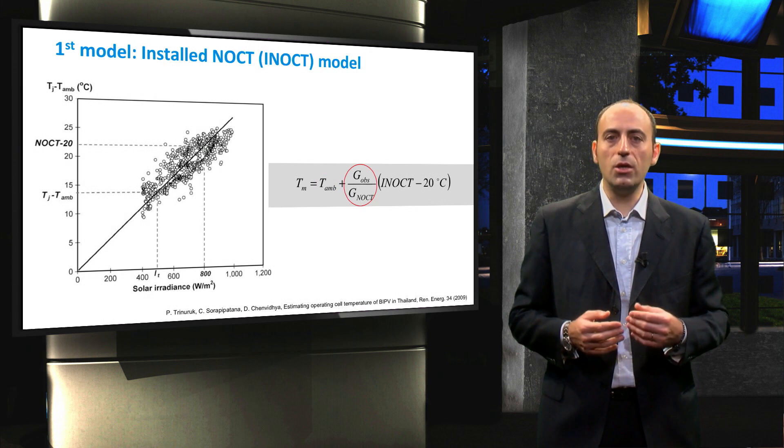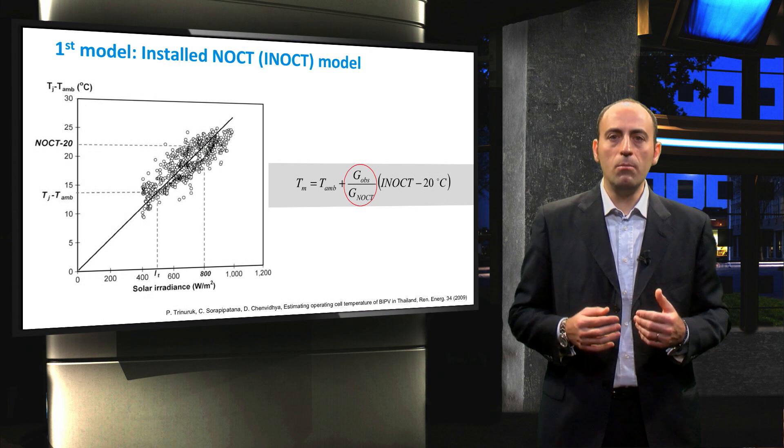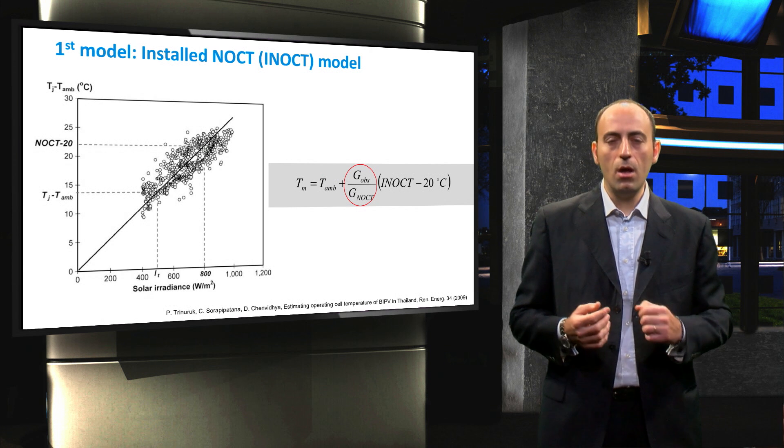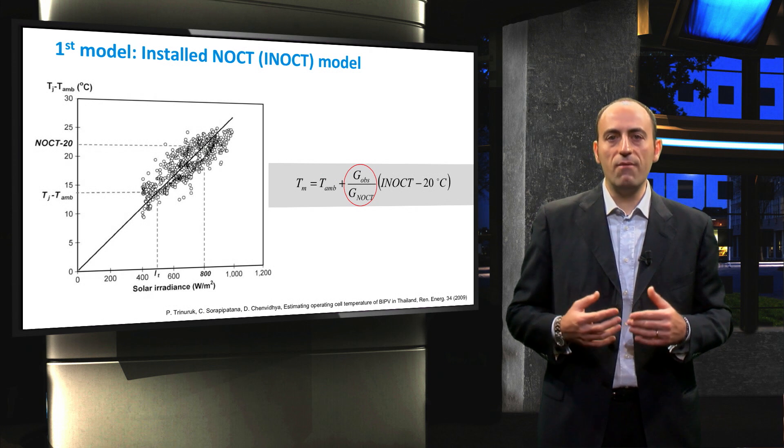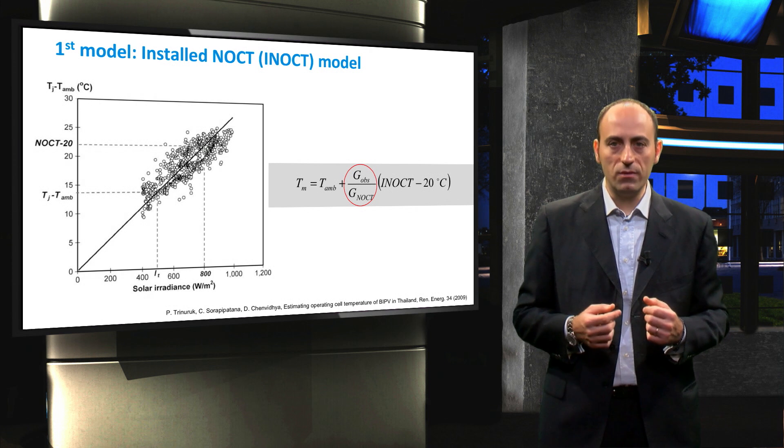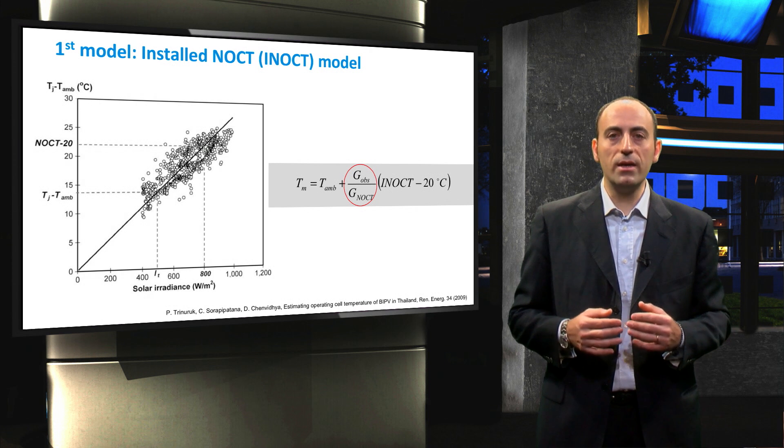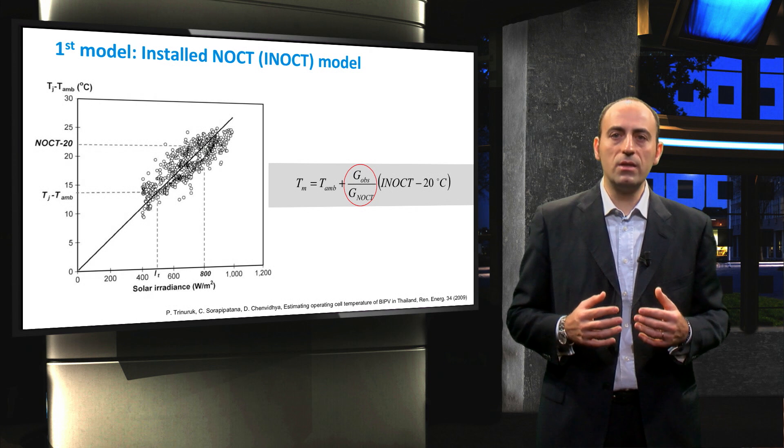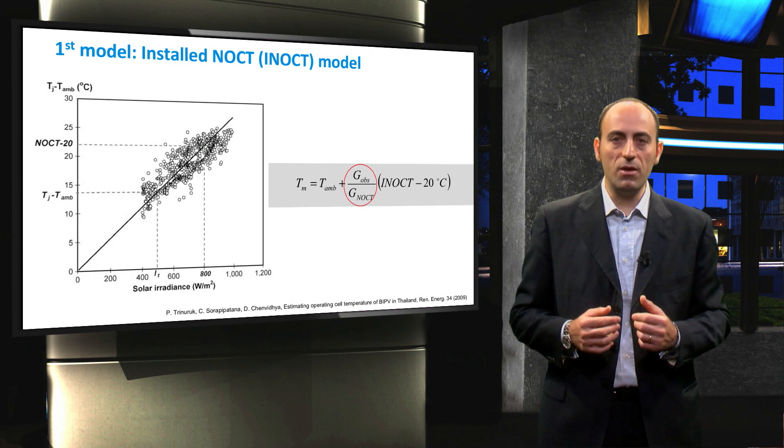The module temperature depends on the ambient temperature plus the ratio between the observed and NOCT radians multiplied by the INOCT temperature as obtained before, minus 20 degrees, a value that offsets the ambient temperature. In this formula, the influence of wind is not included, and this aspect considerably simplifies the model.